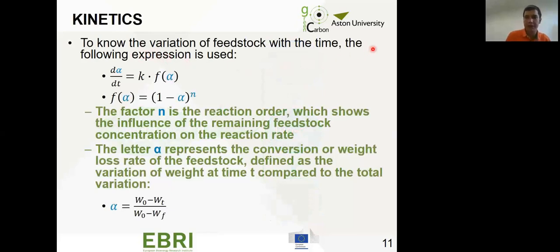Just to refresh the memory about kinetics, we are following this expression: the variation of conversion with time, which is the kinetic, equals the kinetic constant by a function of the conversion. This conversion depends on the reaction order marked with letter n, which shows the influence of remaining feedstock concentration on the reaction rate. The letter alpha is the conversion, the amount of weight that has been lost divided by the total amount. So how much is still left to react and convert into products.